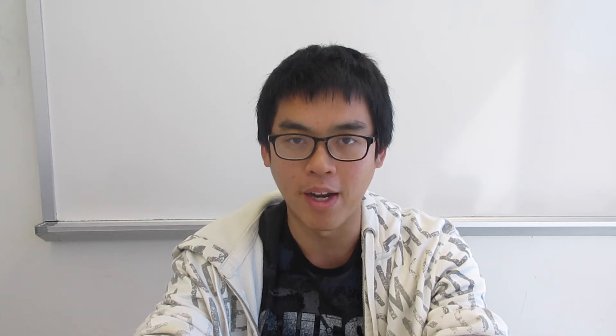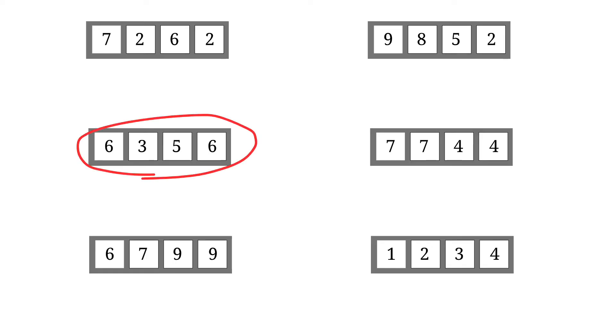So let's go over the solution to each set of numbers one by one. Let's start with 6, 3, 5, 6 first. You can do 6 minus 5 is 1, 1 plus 3 is 4, and 4 times 6 is 24.